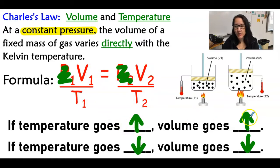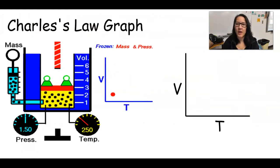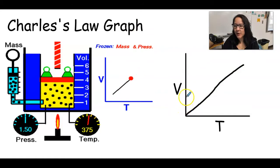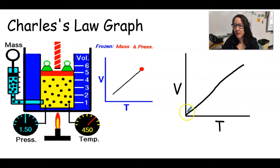Notice that if temperature goes up, so does volume. If temperature goes down, so does the volume. Direct relationship. So a Charles' Law graph is going to be a straight diagonal line because as volume is increasing, so is the temperature.